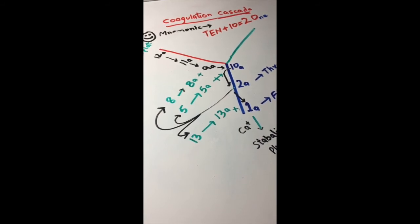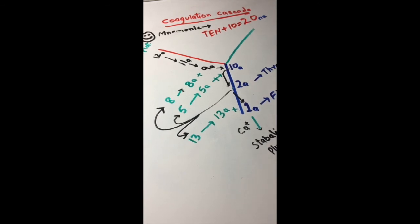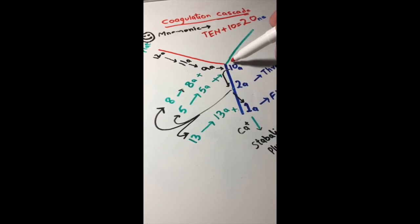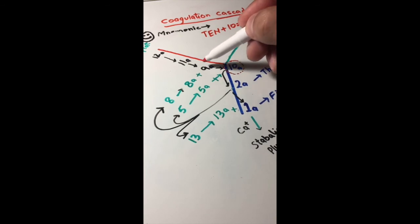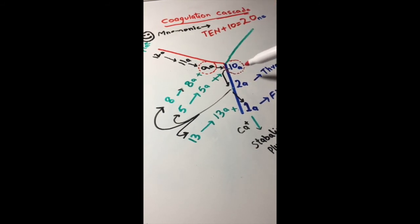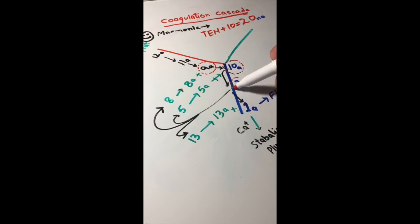Pretty simple. There are some factors which need calcium for activation. They are starting from here—common pathway, middle 10. I'm just gonna use this red marker for them, gonna circle them. They need calcium.